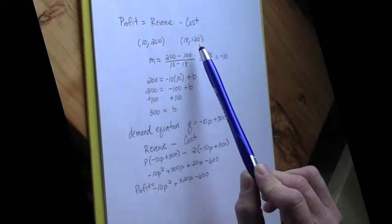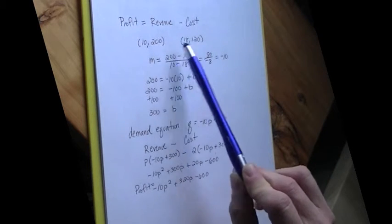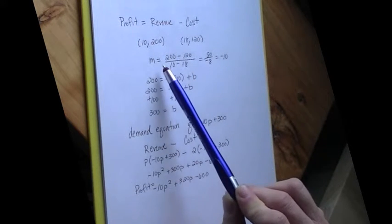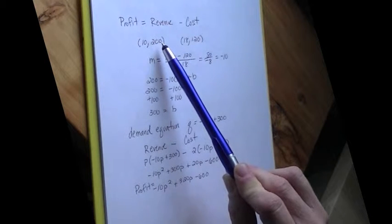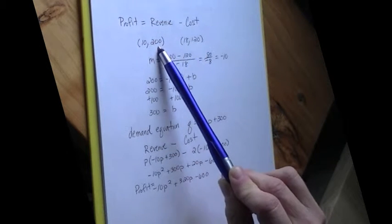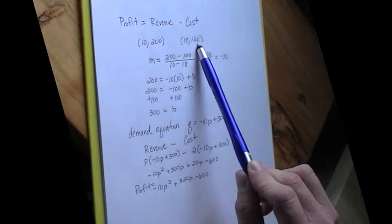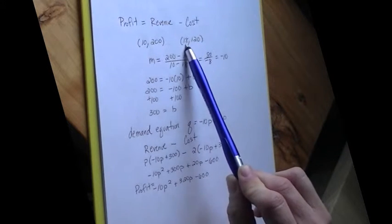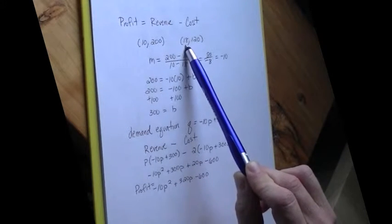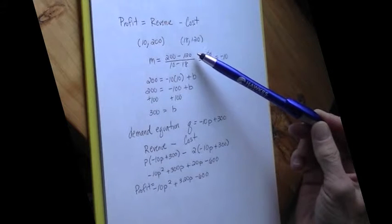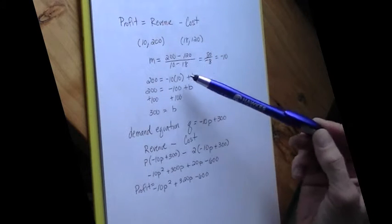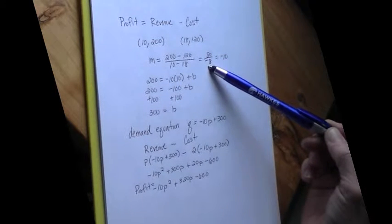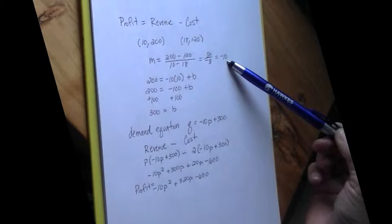So I want to find the equation of the line that would go through these two points. So the slope of our line will be output minus output, so 200 minus 120, over input minus input, so $10 minus $18. 200 minus 120 is 80, and $10 minus $18 is negative 8. That gives me a slope of negative 10.